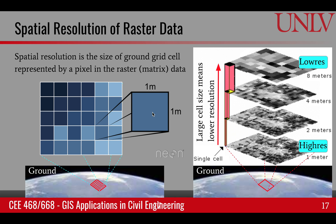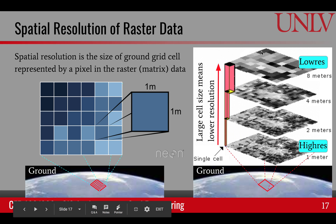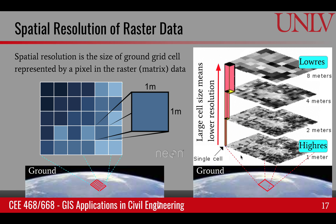As resolution reduces, we cannot resolve features on the ground with larger cells. With smaller cells, we can resolve features — that is where the term spatial resolution comes from. Looking at four layers with different resolutions: at the bottom we have 1 meter resolution, and at the top 8 meters resolution. By inspection, you can see that high resolution has much more detail and we are able to resolve many features on the ground, whereas in lower resolution that ability is reduced.